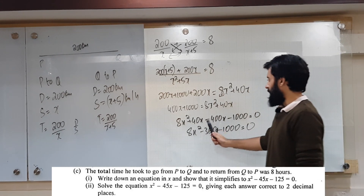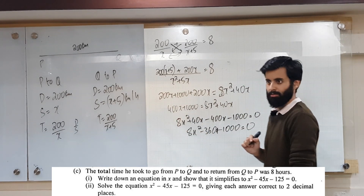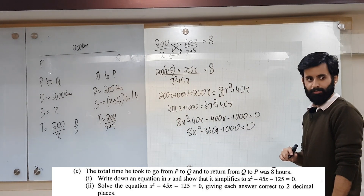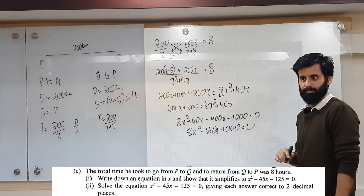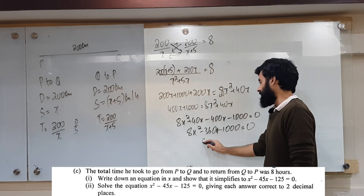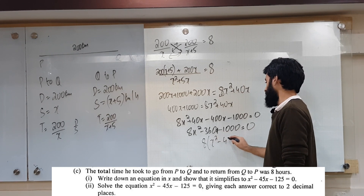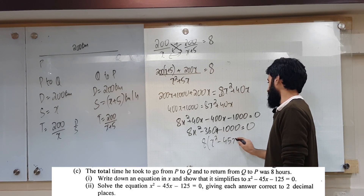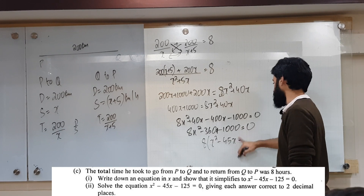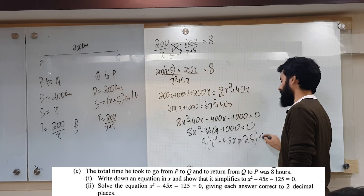Now we have 8x squared, and we need x squared. We can factor out 8 from all three terms. 8x squared, 360, and 1000 are all multiples of 8. So dividing through by 8: 360 divided by 8 is 45, and 1000 divided by 8 is 125. This gives x squared minus 45x minus 125 equals 0.